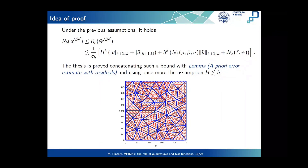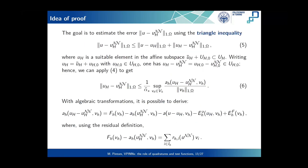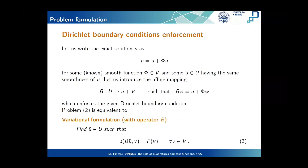You mentioned domain decomposition as future work. Could you tell us something about that? The idea is to have a different network in each subdomain and then to exactly combine them on the interfaces, possibly using operators similar to the operator B to ensure continuity on the interfaces and continuity of the gradients. We are trying different approaches to have the network solve a very small subdomain where the solution is easy to compute and then combine different networks together.